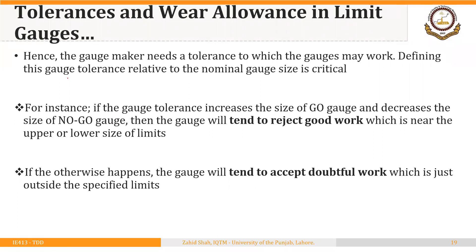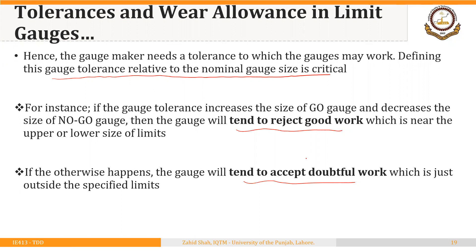Deciding the gauge tolerance relative to the nominal gauge size is critical. If the gauge tolerance increases the size of the go gauge and decreases the size of the no-go gauge, the gauge will tend to reject good work near the upper or lower size limits. If the opposite happens, the gauge will tend to accept doubtful work just outside the specified limits. Applying limits to gauges will either increase or decrease the gauge size, creating one of these two risks.